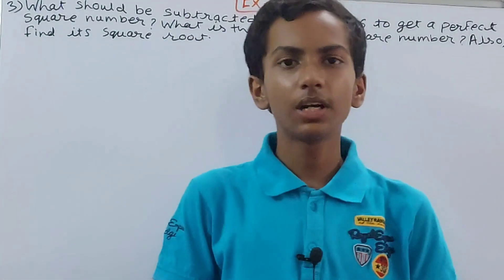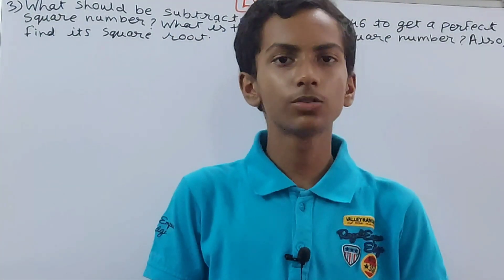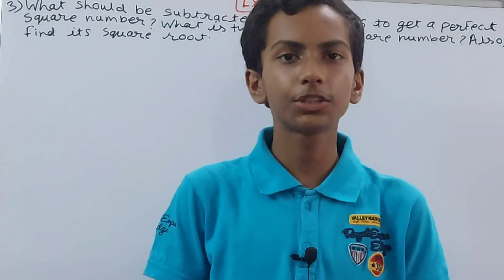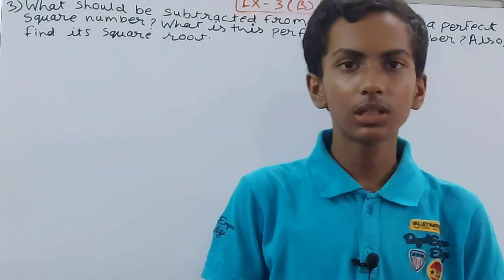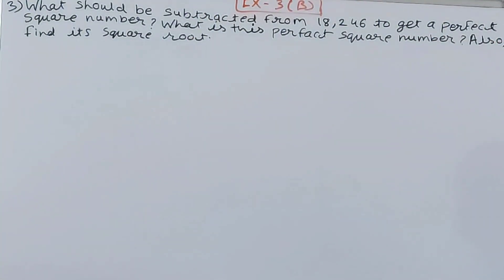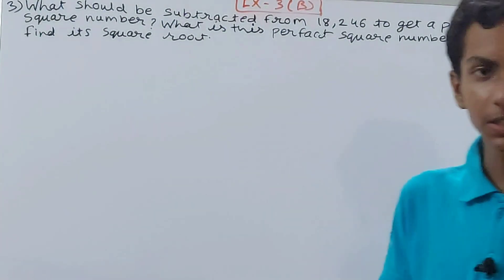Hello friends, welcome back to my YouTube channel Lockyer Learning. In this video, we are going to solve ICSE Mathematics Class 8, Chapter 3, Square and Square Roots, Exercise 3, Question Number 3. It asks: What should be subtracted from 18,246 to get a perfect square number? What is this perfect square number? Also find its square root. Very simple.